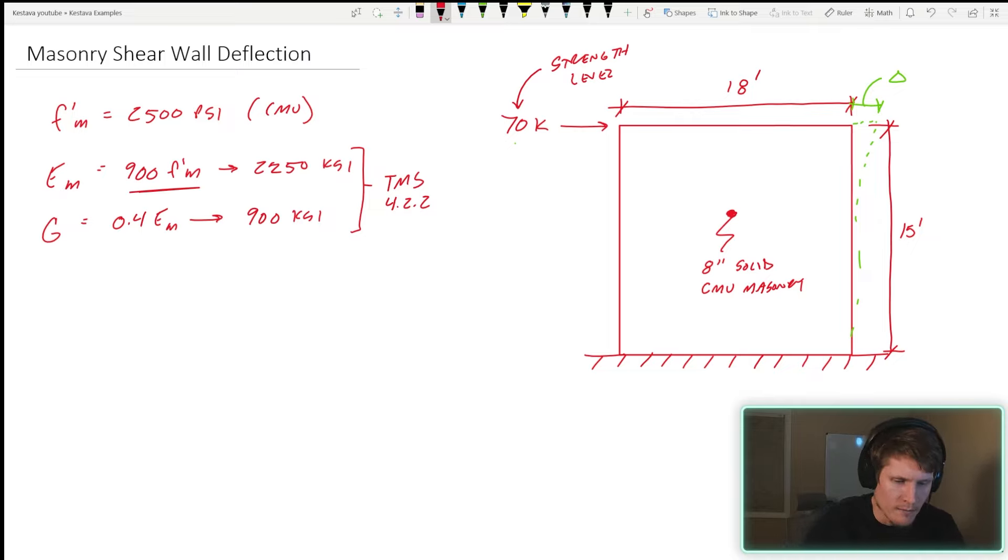Next we need our modulus of rigidity or shear modulus, known with an equation as 0.4 E prime m. This equation is dependent upon your modulus of elasticity of your brick. We plug that in and convert to KSI: 900 KSI is our shear modulus. These two equations are found in the TMS section 4.2.2.